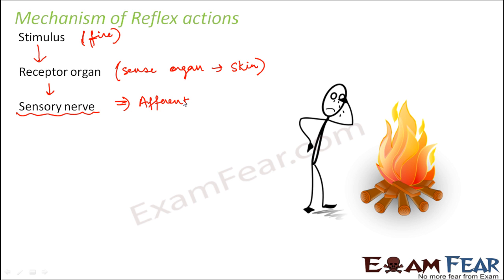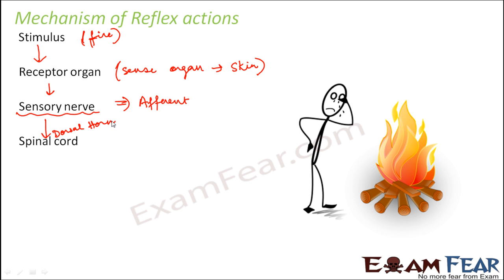These sensory nerves carry the electric impulse to the spinal cord, so it reaches the spinal cord. It enters the spinal cord through the dorsal cord, because the dorsal cord is connected to the sensory nerve. So through the dorsal cord, the impulse enters the spinal cord.